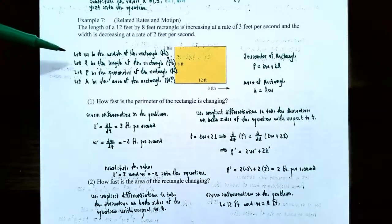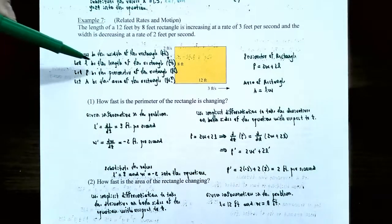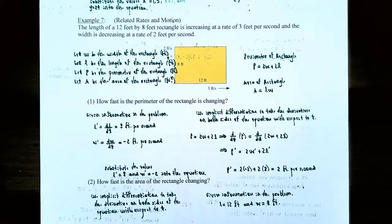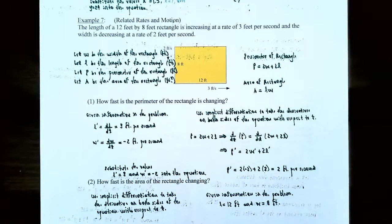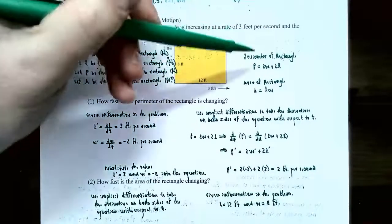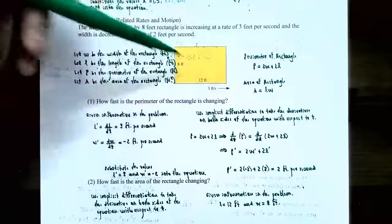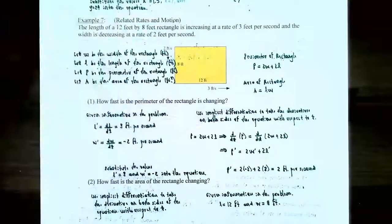Several things are changing in this problem. Let W be the width of the rectangle in feet, and let L be the length in feet. We'll also discuss the perimeter and area. Let P be the perimeter in feet and A be the area in square feet. The perimeter formula is P equals 2W plus 2L, and the area formula is A equals L times W.